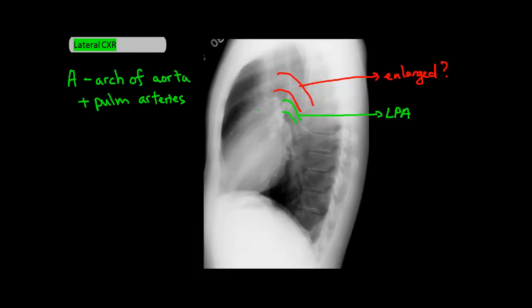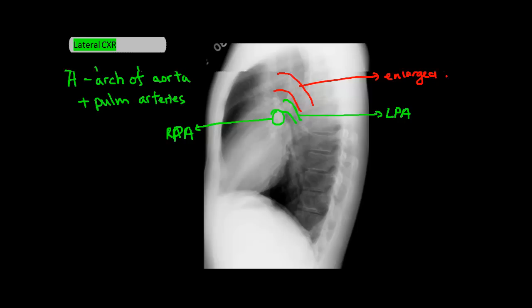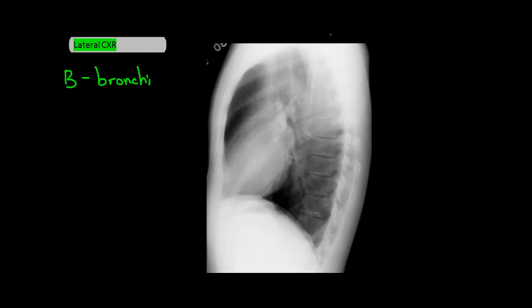I admit that the left pulmonary artery is actually pretty difficult to make out sometimes, but I do promise you it's there. The right pulmonary artery is this structure here, which is actually coming at you. The pulmonary arteries are important to look at because they can be more prominent in patients with pulmonary hypertension. Next is B, which stands for bronchi.